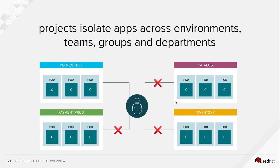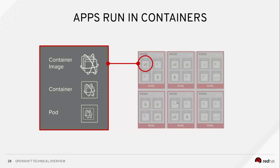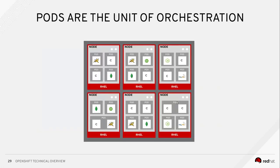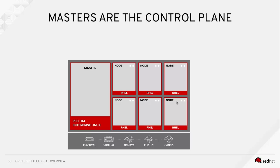Projects give you isolation across environments, teams, groups, and departments. Each user can have their own project, each team can have their own project, each enterprise can have their own project. One OpenShift cluster can have hundreds of projects - we do have customers doing this. It gives you the ability to have your playground and sandbox and not delete your neighbor's stuff. In VMware worlds, everybody can see everybody's VMs - this gives you more isolation and protects people from doing stupid things.